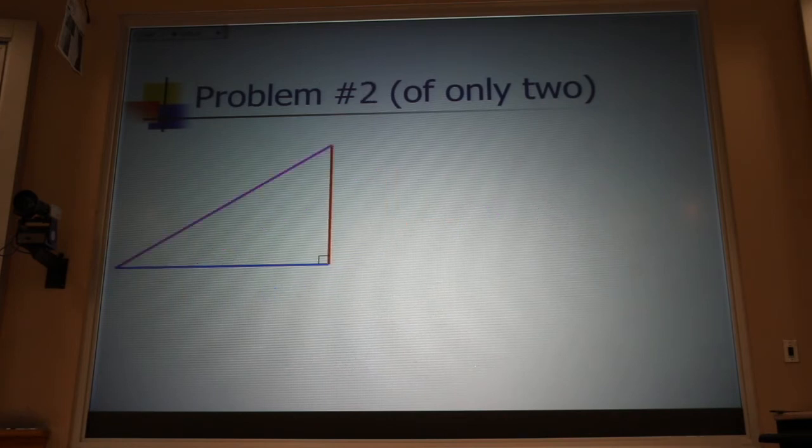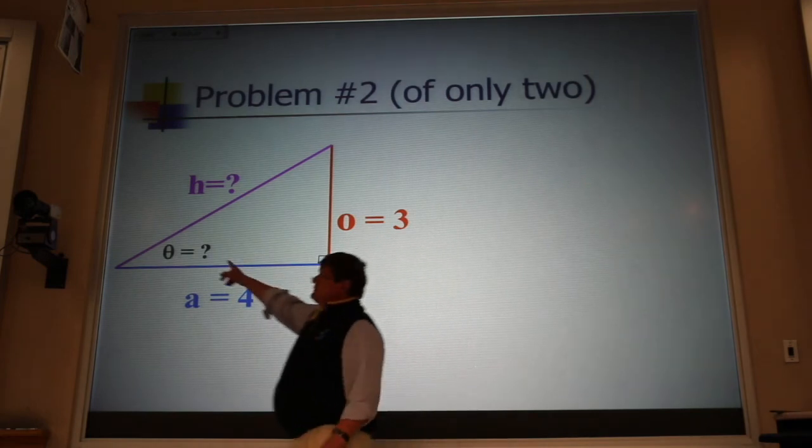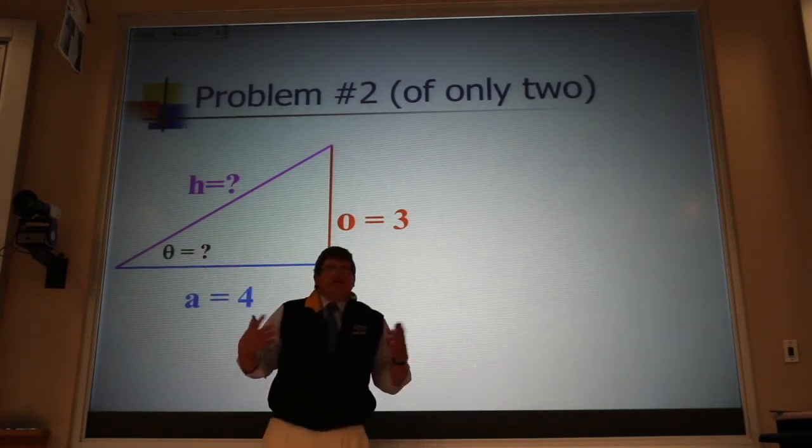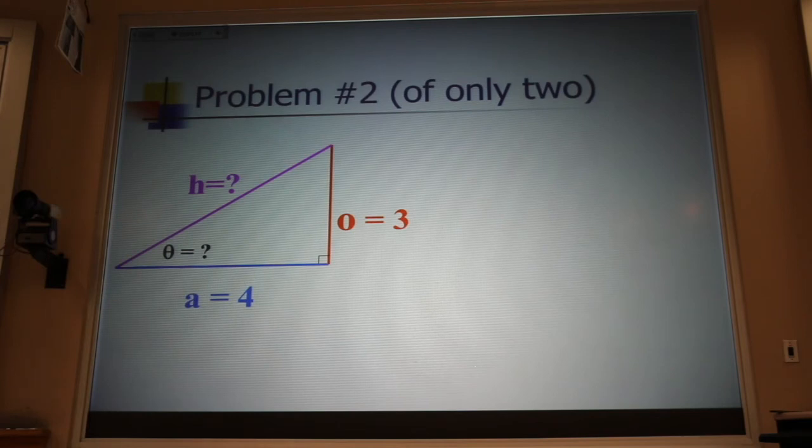Now, the second problem is the reverse. If I give you the sides and ask you for the hypotenuse and this angle, that's the problem we solve when we have the components of a vector, the x part and the y part, and we want to find the vector itself.